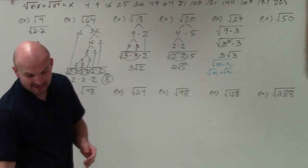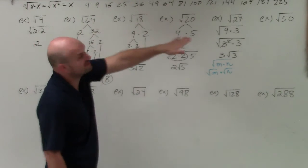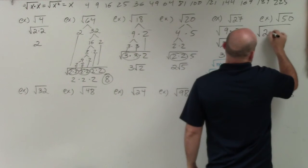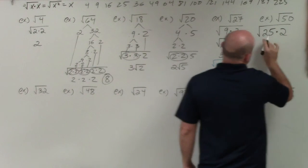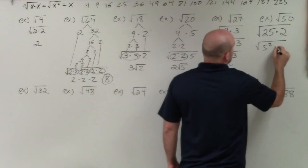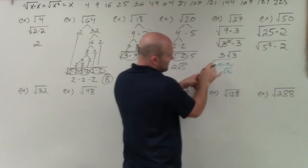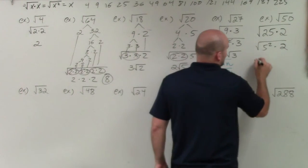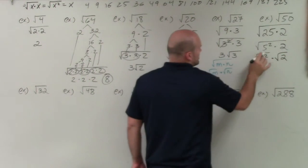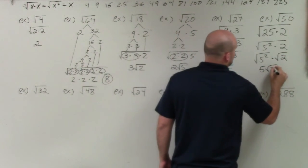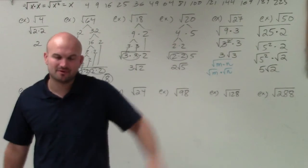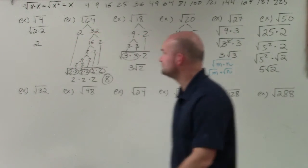For the square root of 50, I look for a square number that divides into 50 — and yes, 25 times 2. I can rewrite 25 as 5 squared times 2. Using the product property, this becomes the square root of 5 squared times the square root of 2. The square root of 5 squared is just 5, so the answer is 5√2.